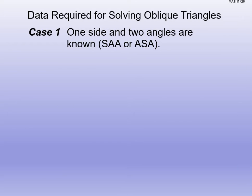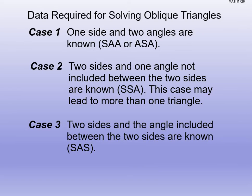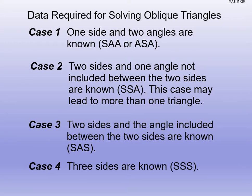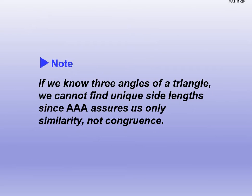You can go through the different cases — side-angle-angle, side-side-angle, side-angle-side — these should be review from geometry. The key one to know: if we know three angles of a triangle, we cannot find unique side lengths since angle-angle-angle assures us only similarity, not congruency. For example, a 45-45-90 triangle might have sides 1-1-√2 or 10-10-10√2 — they're similar but not congruent.